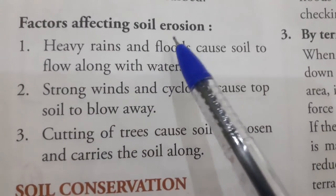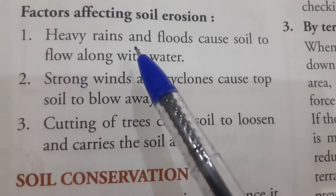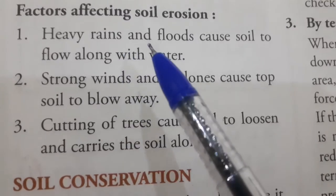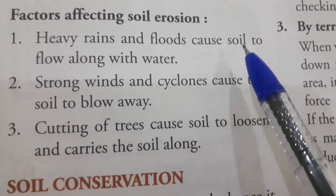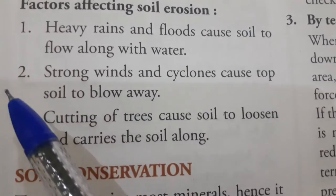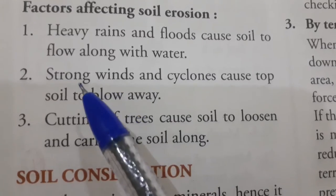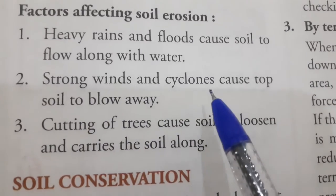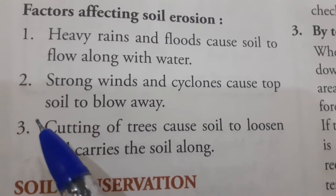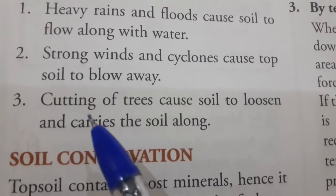Now, factors affecting soil erosion. First is heavy rains and floods — jab bahut zor se baarish aati hai, baad aati hai, uski wajah se paani ke saath mitti beh jaati hai, toh topsoil remove ho jaati hai. Second, strong winds and cyclones cause topsoil to blow away — jab strong winds chalti hain ya toofaan aata hai, topsoil jo soft aur light hoti hai woh hawa ke saath ura jaati hai.